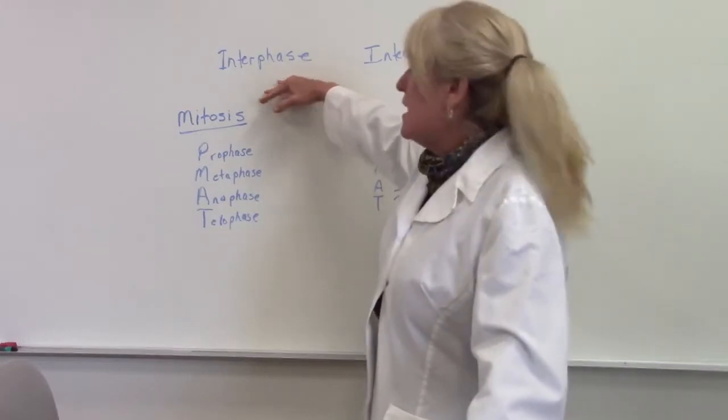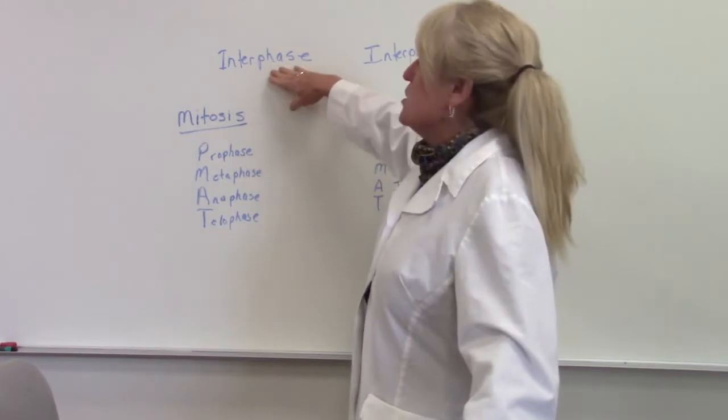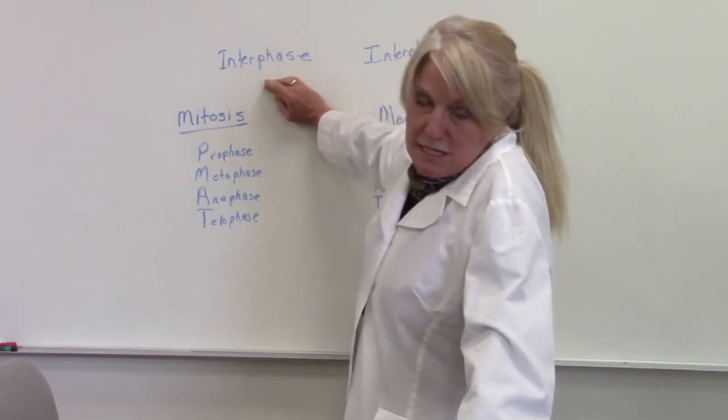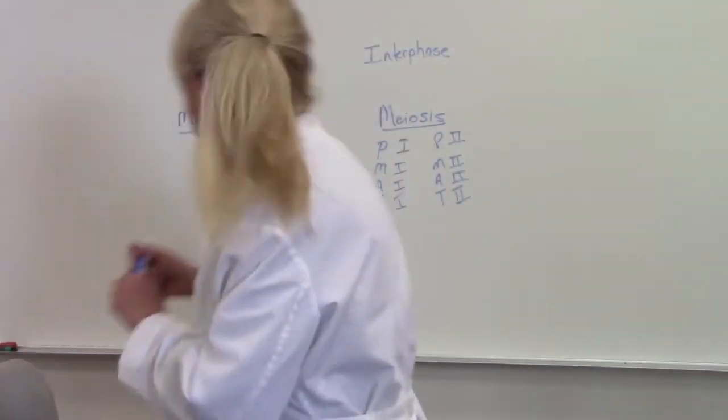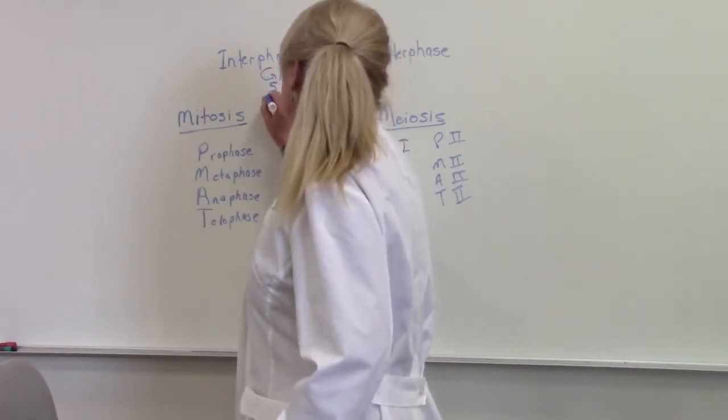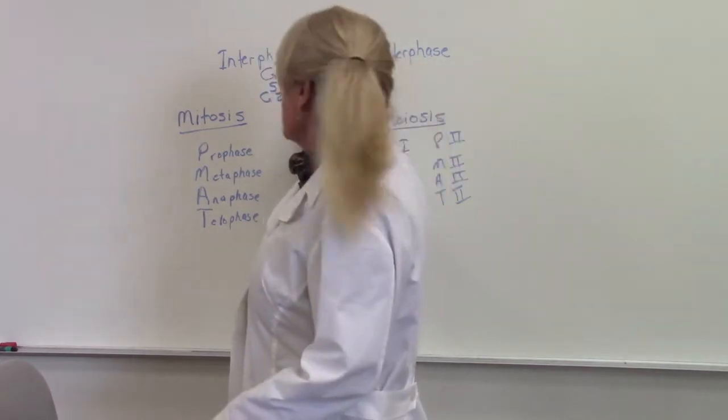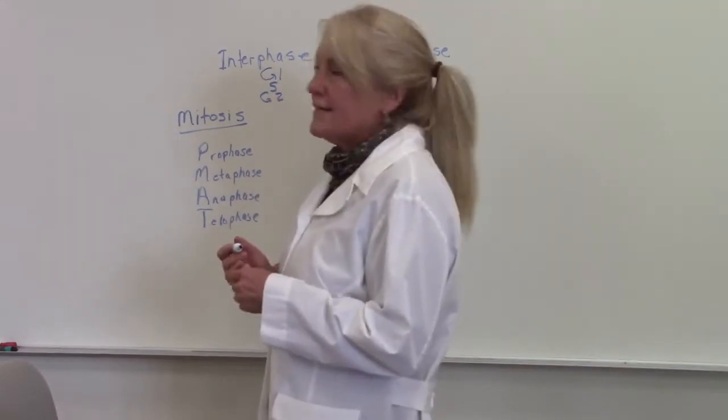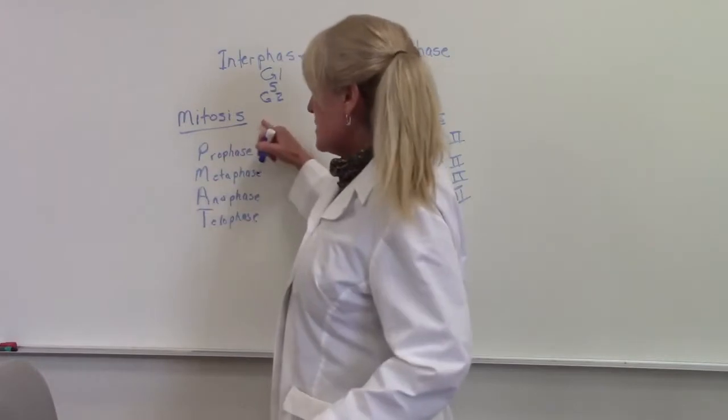Both of them have an interphase, and there's three phases to interphase: G1, S, and G2. G1 is growth - the cell gets a bit bigger, making proteins and extra stuff. S is the synthesis phase where we make copies, and G2 is making extra proteins, getting ready to divide.